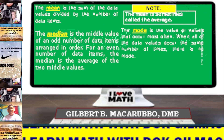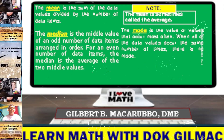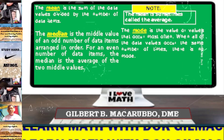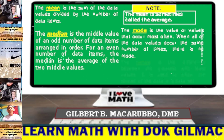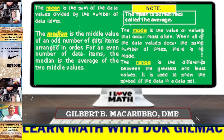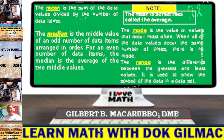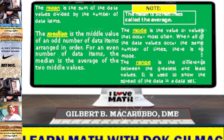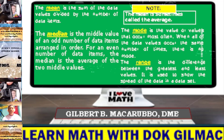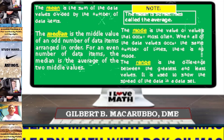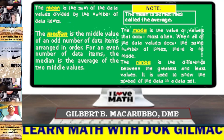When all of the data values occur the same number of times, there is no mode. The range is the difference between the greatest and least values. It is used to show the spread of the data in a data set.